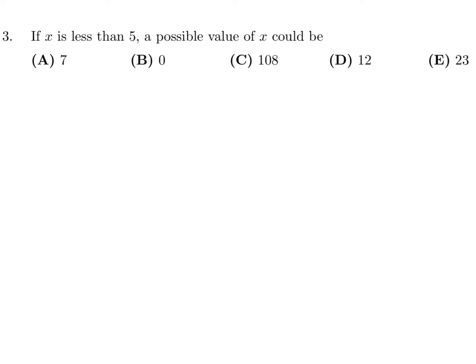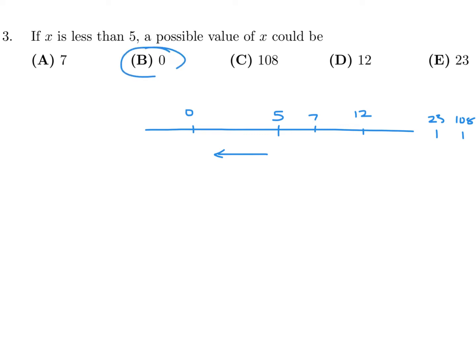Question 3: If X is less than 5, a possible value for X could be. On a number line, if this is 5 and X is less than 5, it's got to be on this side of the number line. Plotting the options: 7 is over here, 0 is over here, 12 is here, 23 is way out here, and 108 is also way out there. The only number less than 5 is 0, so B is the answer.